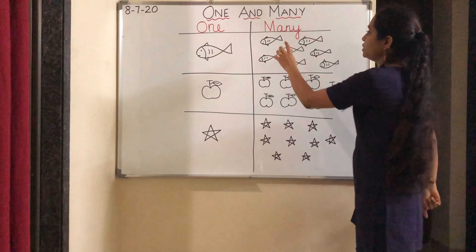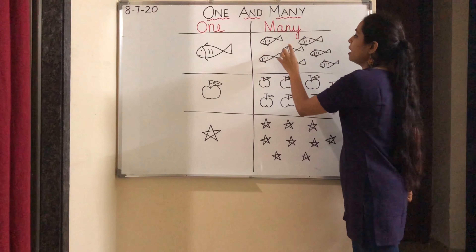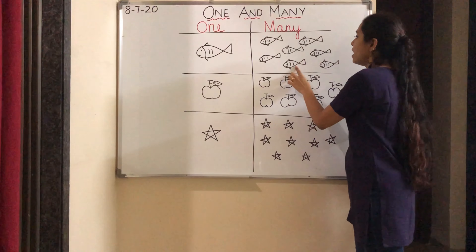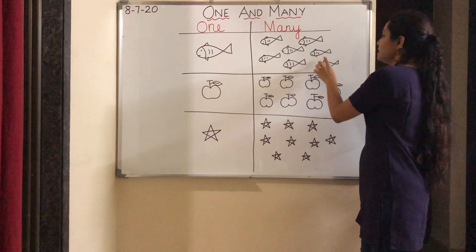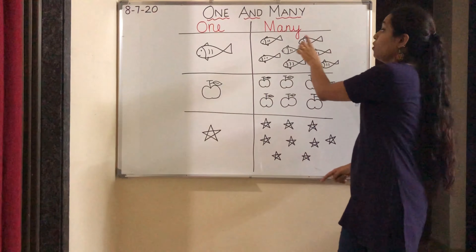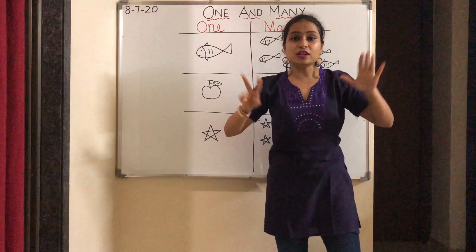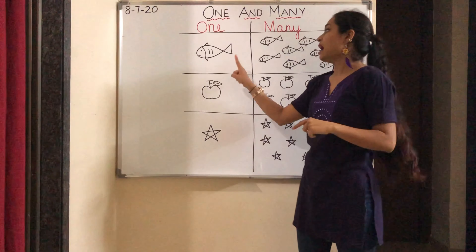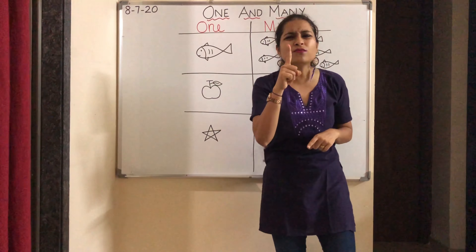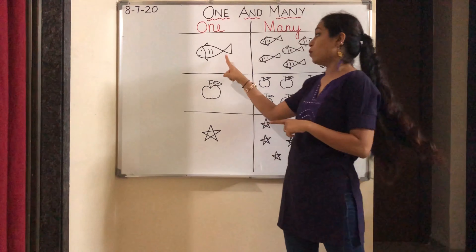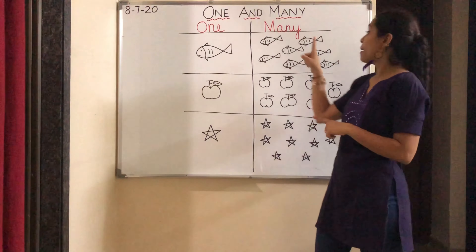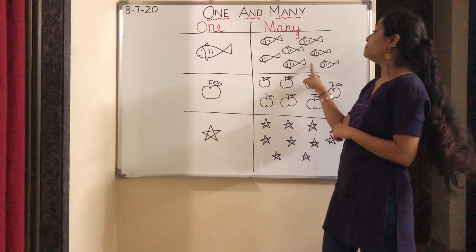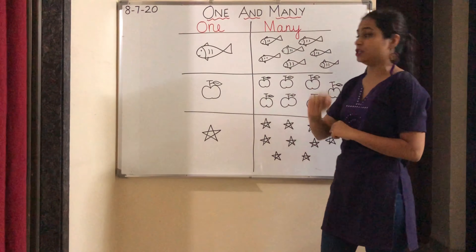Let's count the fishes. One, two, three, four, five, six, seven. Over here there are seven fishes — many fishes. And over here there is one fish. So, one fish, many fishes.